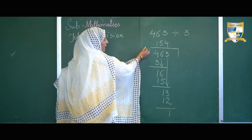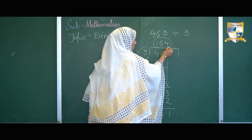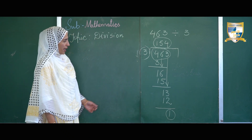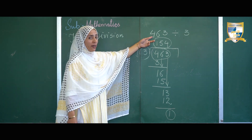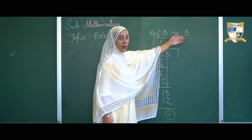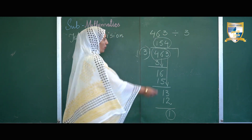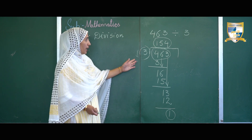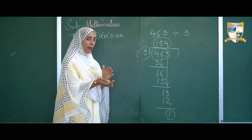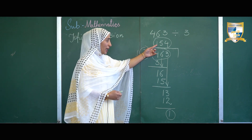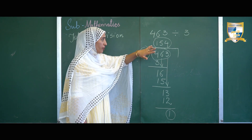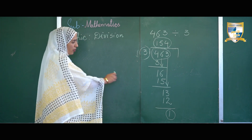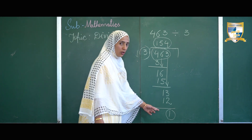Now let's discuss the numbers in this problem. 463 is the number that we divided — that is called the dividend. 3 is the number that divides the dividend — that is the divisor. 154 is the quotient: the result obtained in the process of division. We can say the quotient tells us how many times the divisor is included in the dividend — 3 is included in 463 exactly 154 times. The leftover number is 1, so 1 is the remainder. The leftover number in the process of division is the remainder.